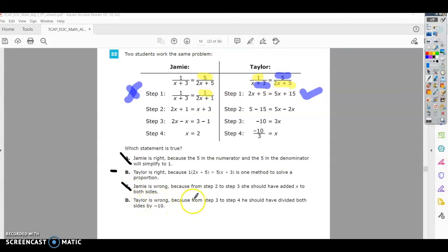Taylor is wrong because in steps 3 and 4, he should have divided both sides by negative 10. When solving for x, you always divide by the number beside the x. They divided both sides by 3, so that's correct. This statement says Taylor is wrong, so that's not right. So B that we thought in the beginning is correct. That is actually the correct answer.